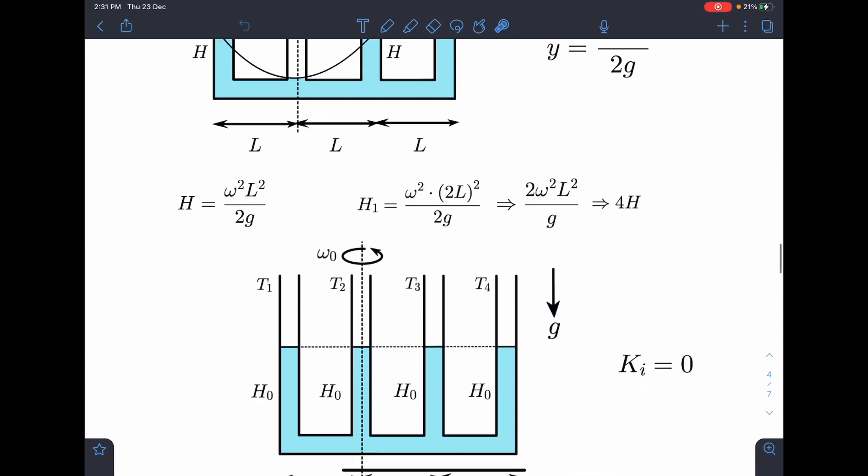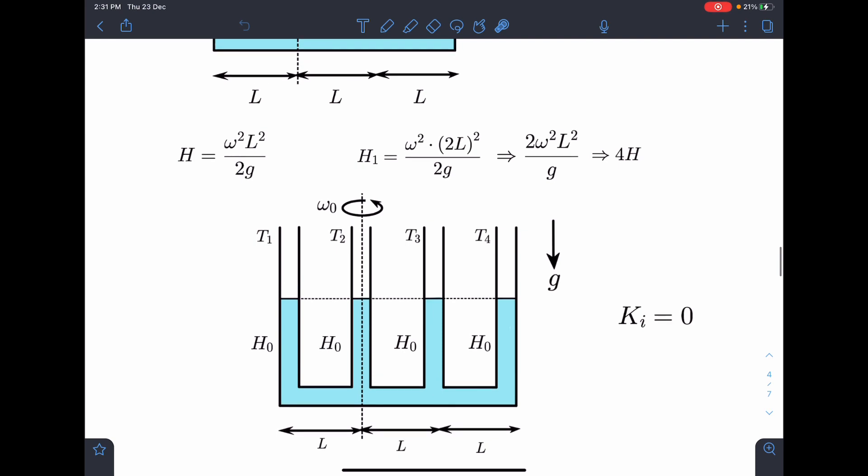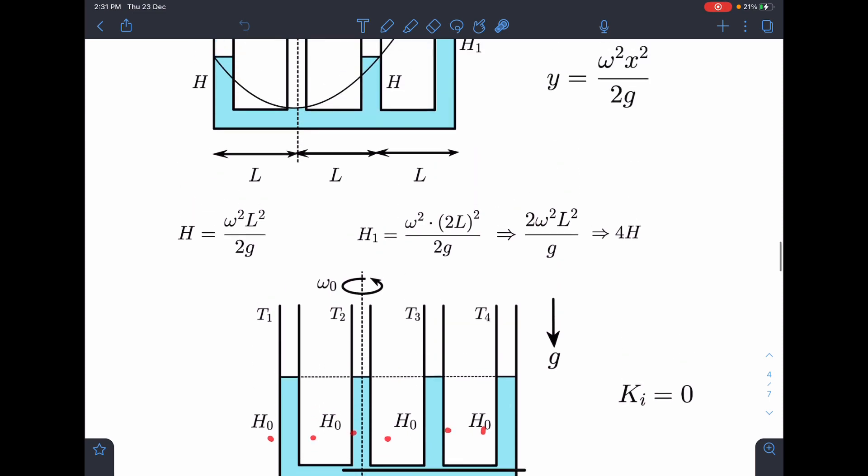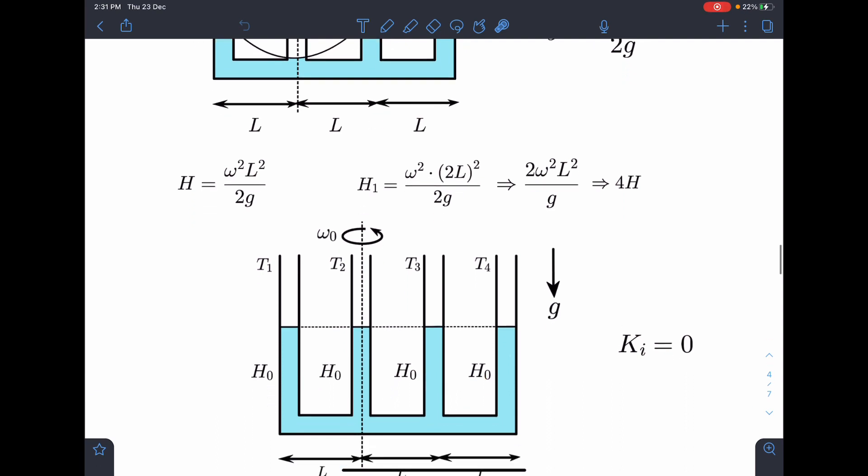Now let us analyze the initial situation. We can say here when this was at rest, this was the situation here. So initial kinetic energy is 0. And now here due to the rotation here, initially this h0, h0 gets converted into this. So we will establish another relation between h0 and these heights h1 and h.